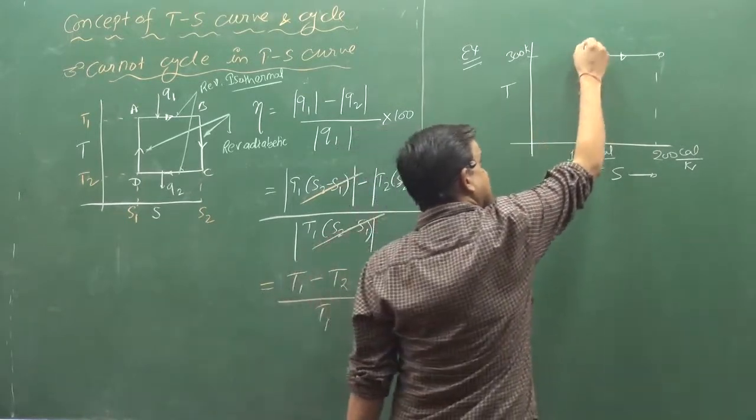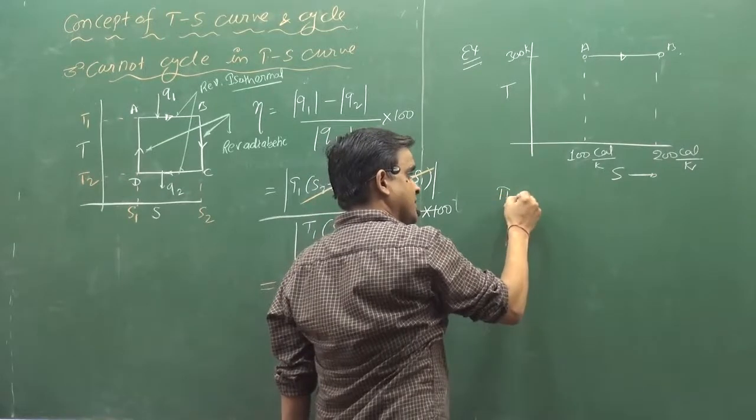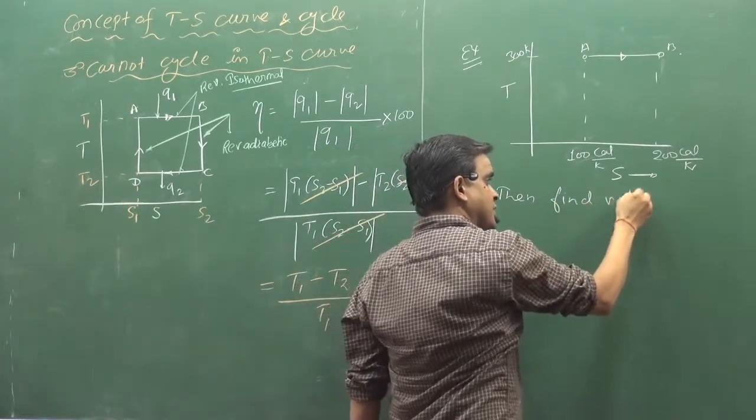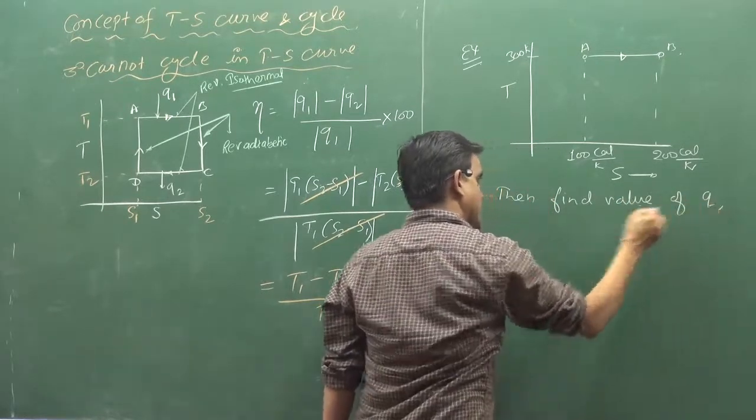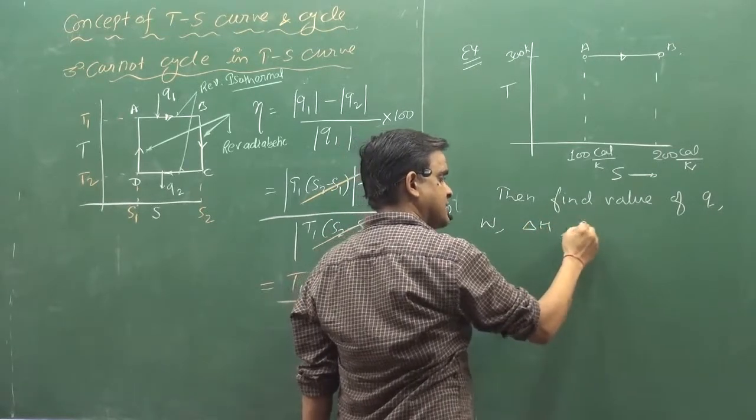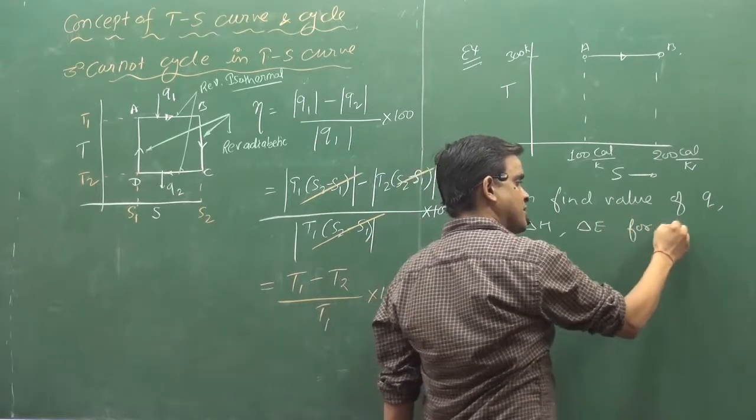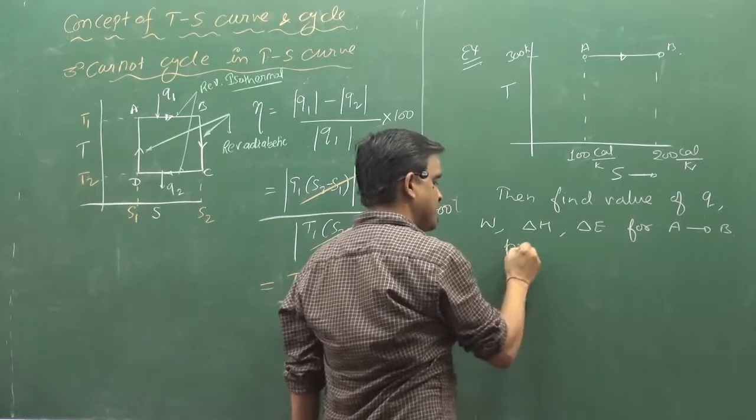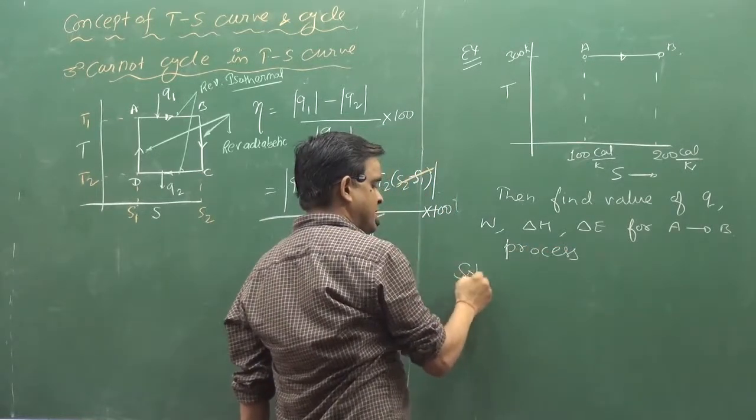यहाँ temperature दिया है 300 Kelvin. Entropy के value दे रखिये यहाँ पर 100 calorie per Kelvin और यहाँ 200 calorie per Kelvin. यह process है. Then find हर चीज, a से b. Then find value of Q, W, delta E, delta H for A B process.